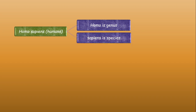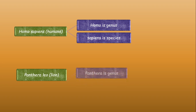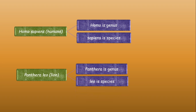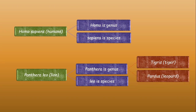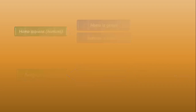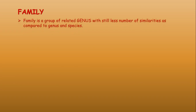Humans are Homo sapiens, where Homo is the genus and sapiens is the species. Another example is Panthera leo (lion), where Panthera is the genus and leo is the species. The Panthera genus also includes Panthera tigris (tiger) and Panthera pardus (leopard).